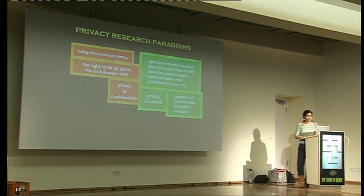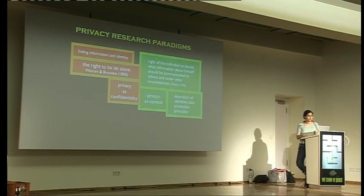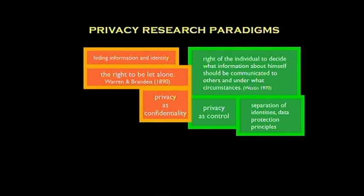The second paradigm I call privacy as control — the more popular one economically, and one businesses like. It depends on the definition: the right of the individual to decide what information about himself should be communicated to others and under what circumstances — that's from Weston in 1970. Some principles researchers try to achieve include separation of identity: having a number of digital identities or data bodies, separating your audiences, and having some control over what happens with data once you've revealed it. This relies on data protection as the transparency tool.